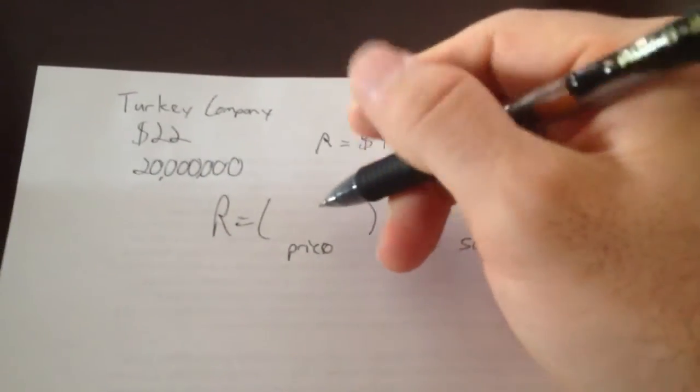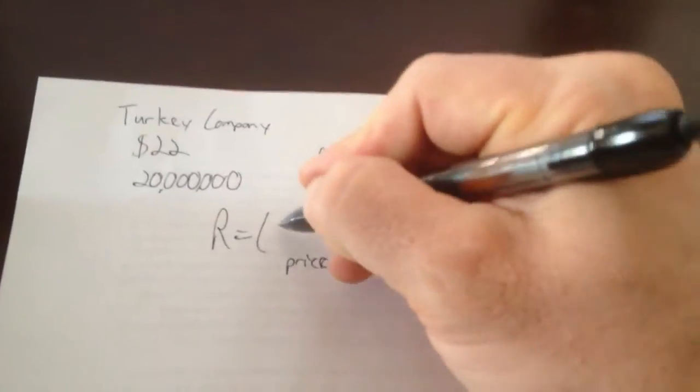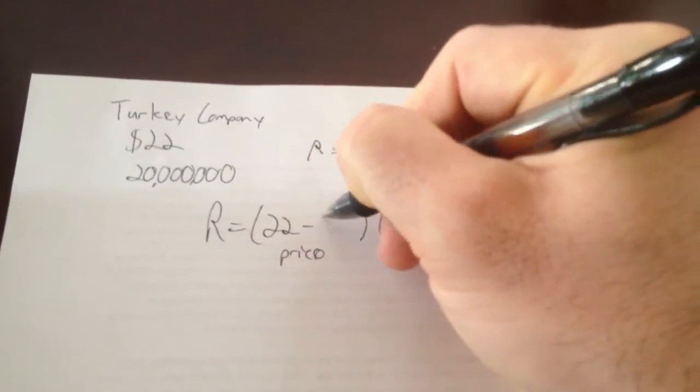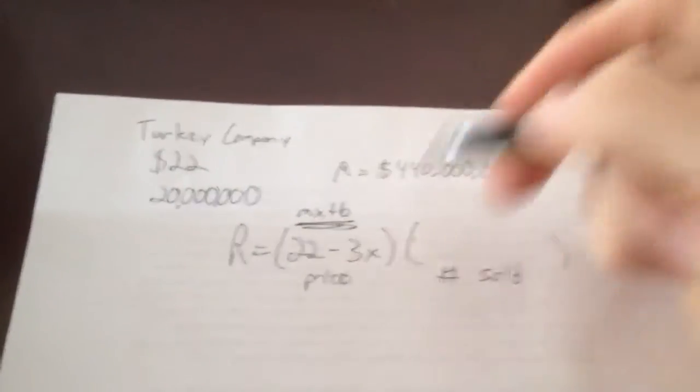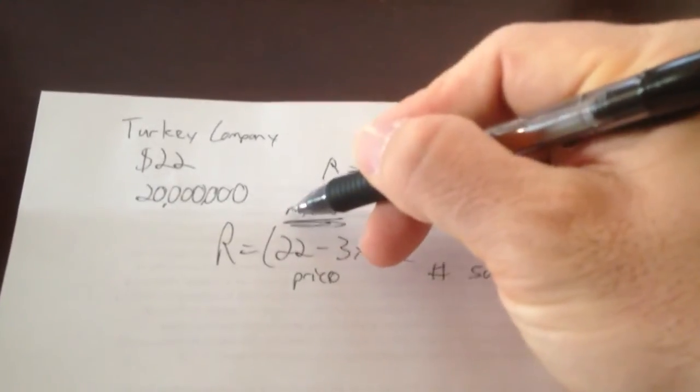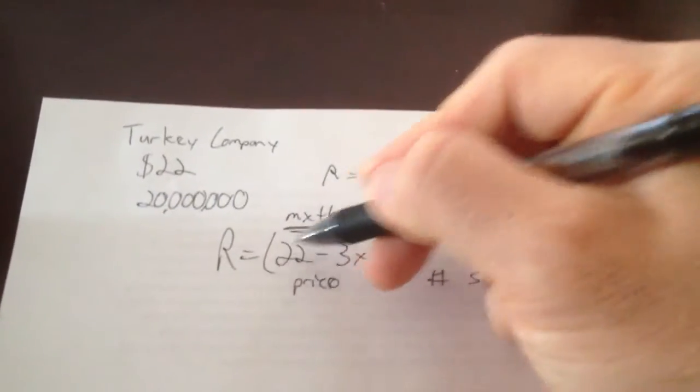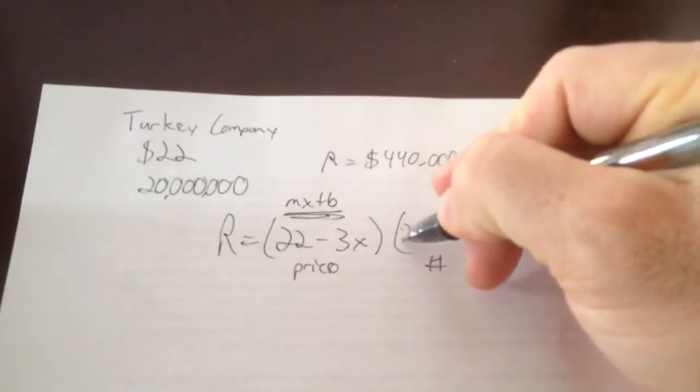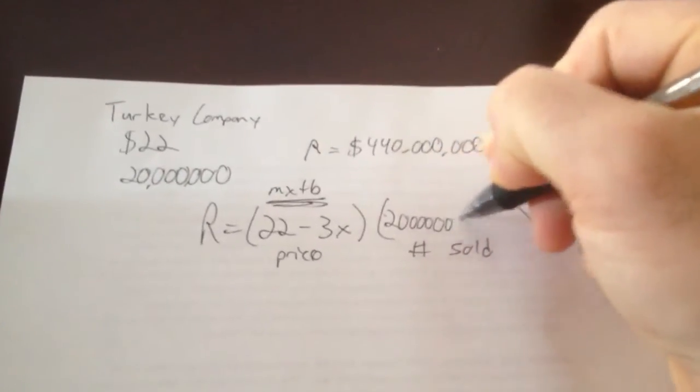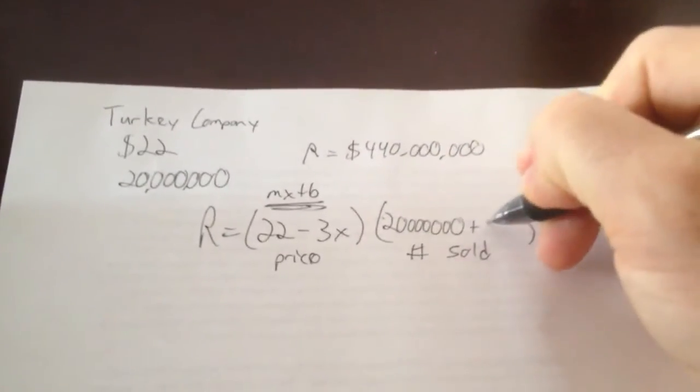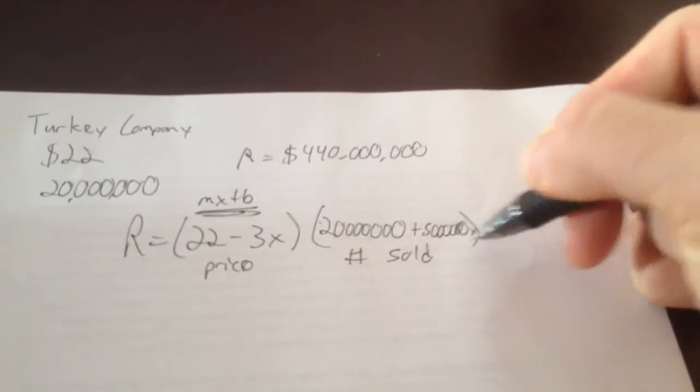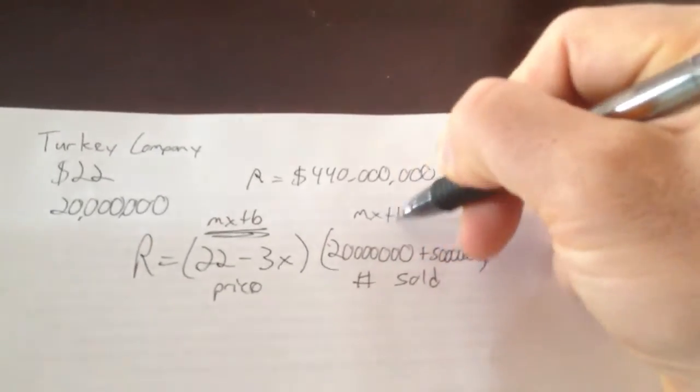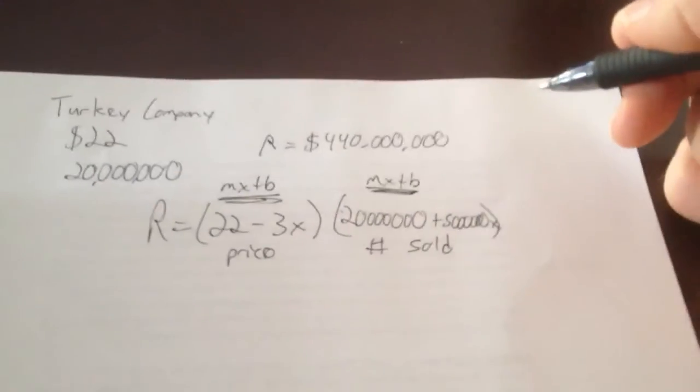Right now, the price is $22, but I'm going to lower it by $3. So what I did was 22 minus 3X. Remember we talked about this being that MX plus B thing that we talked about all year. Beginning amount and then the rate of change, how quickly you're changing it. So 22 minus 3X. When you do this, when you lower your price, you take that 20 million customers that we had and you add 5 million every time you lower the price by $3. So 20 million plus 5 million X. Again, MX plus B. Beginning amount for number sold and the change that you're going to have.